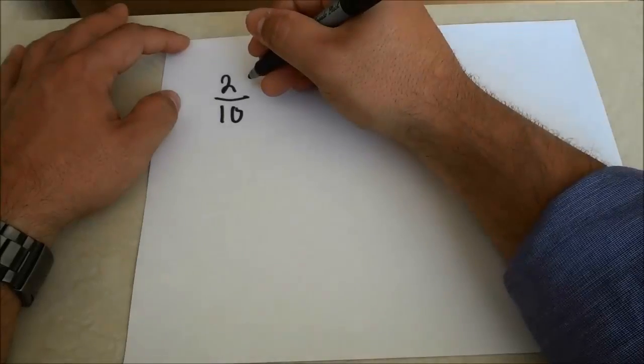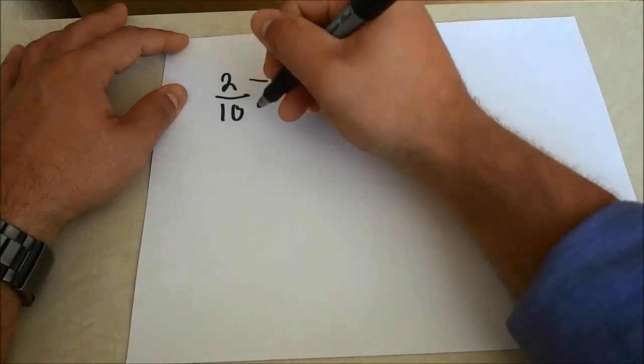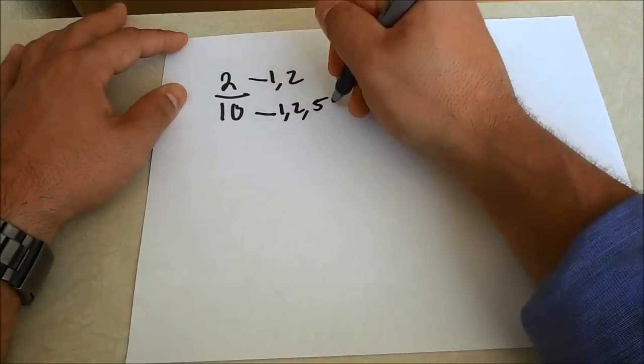So let's look at the factors of 2. The factors of 2 are simply 1 and 2. The factors of 10 are simply 1, 2, 5, and 10.